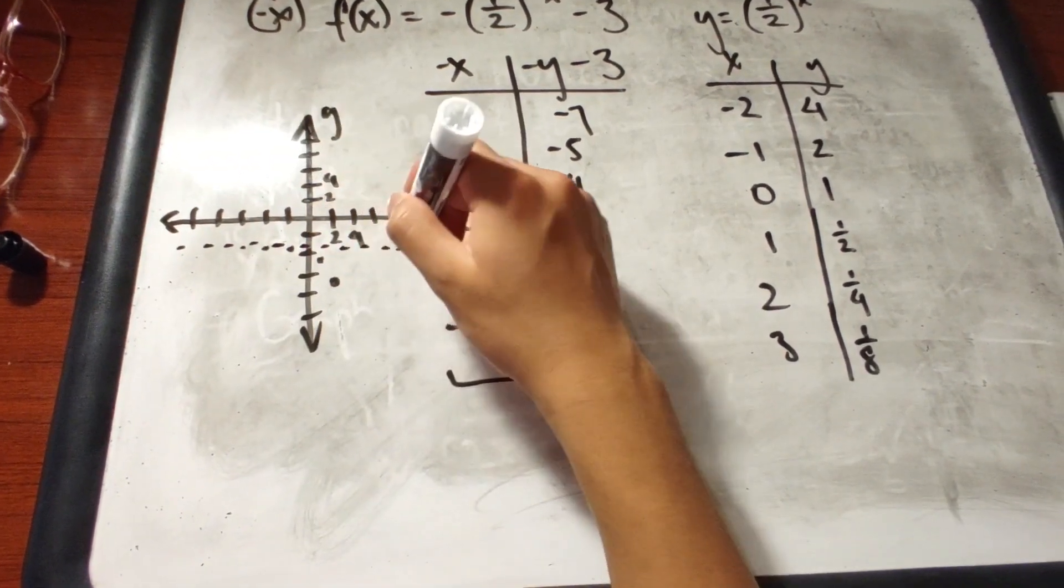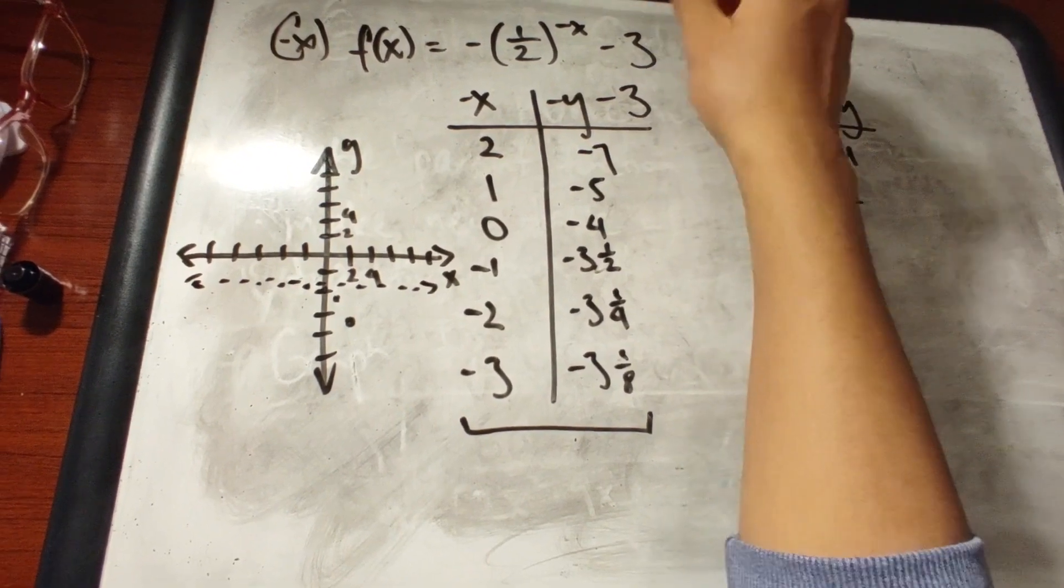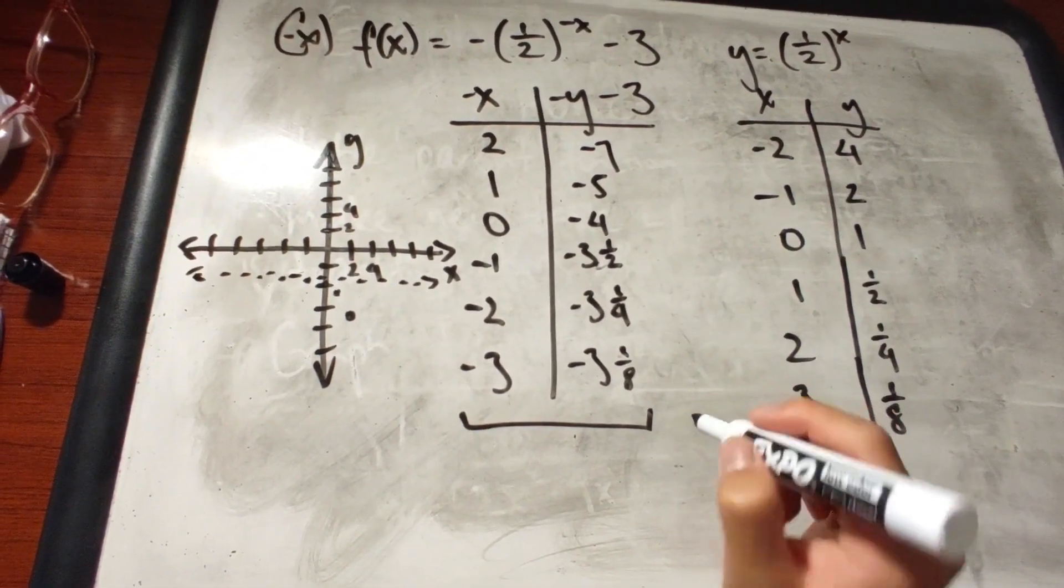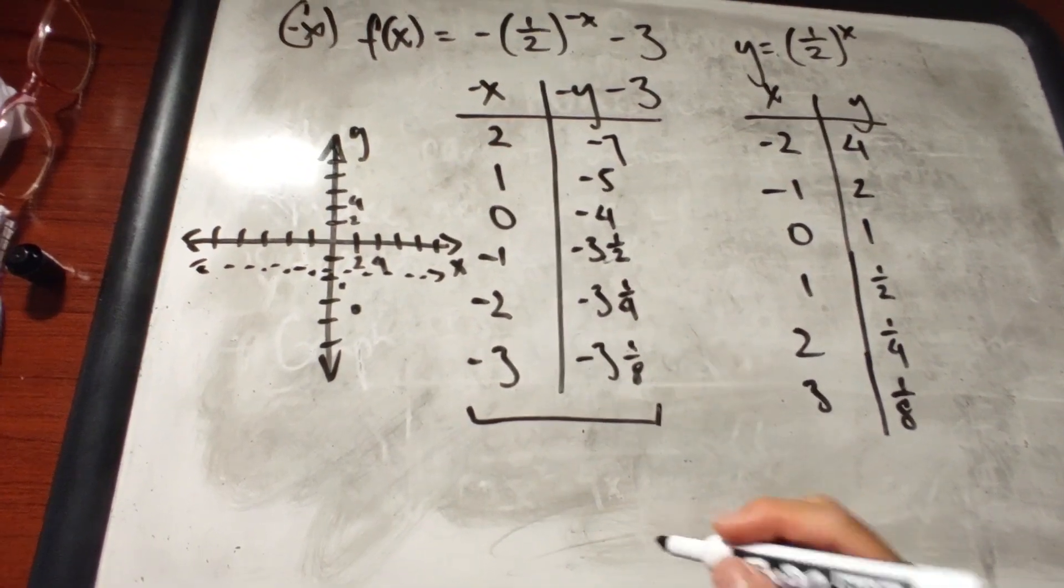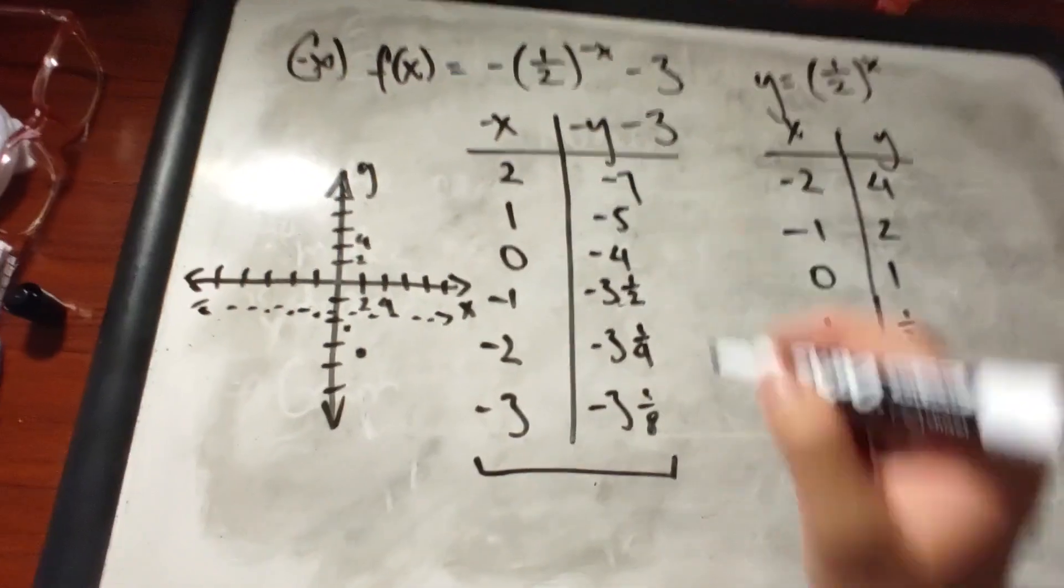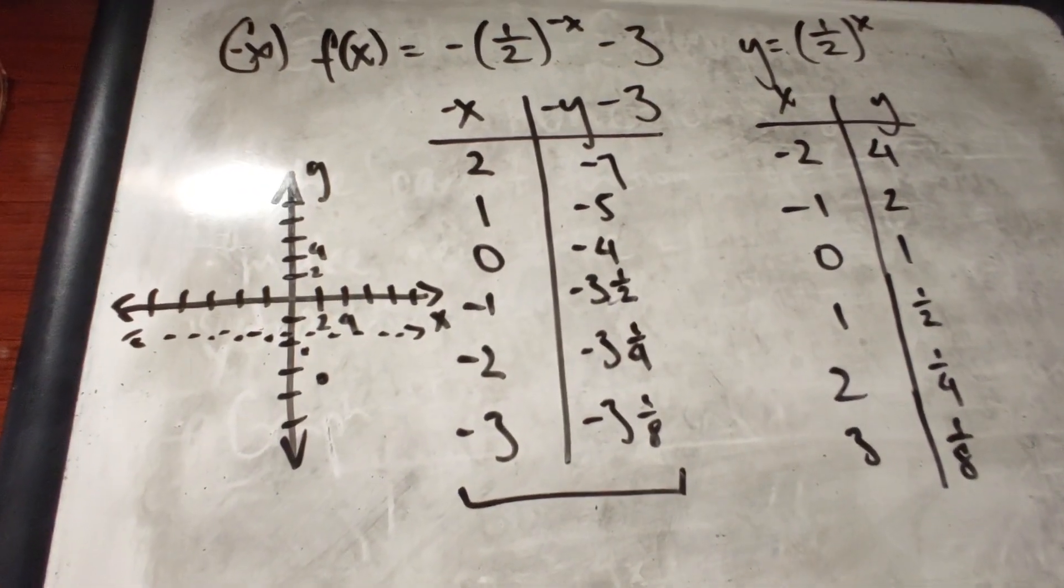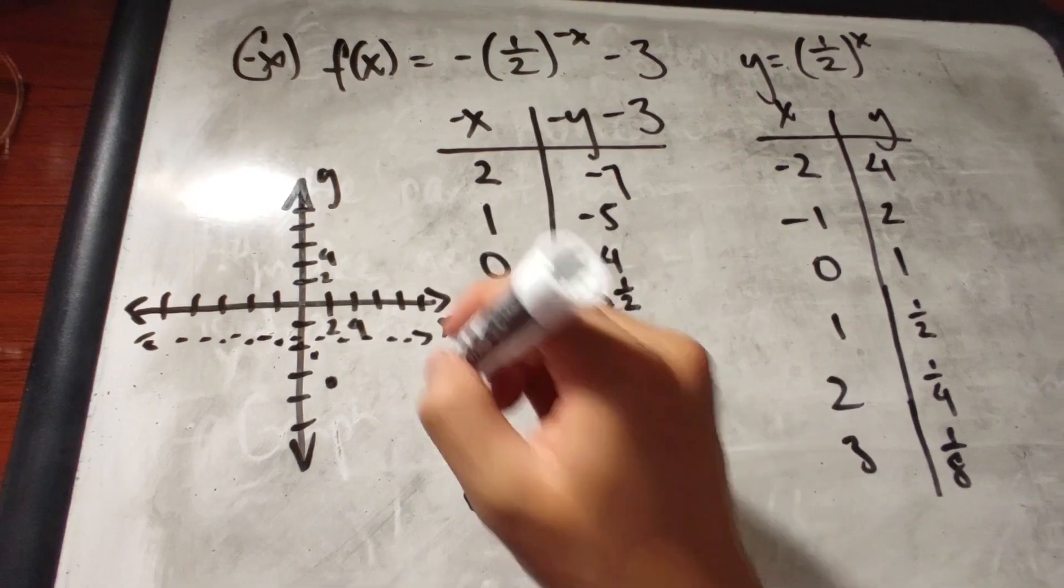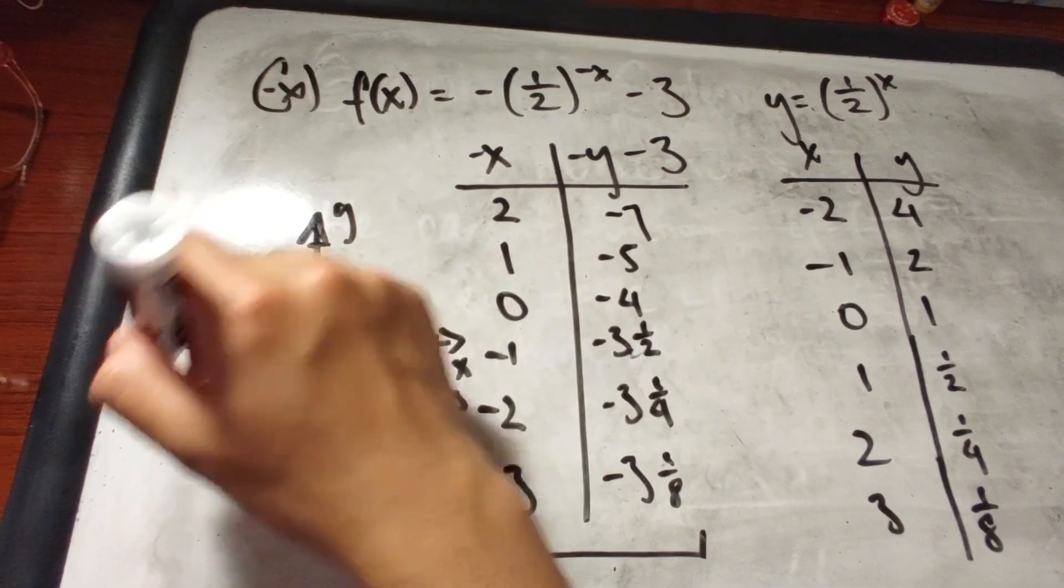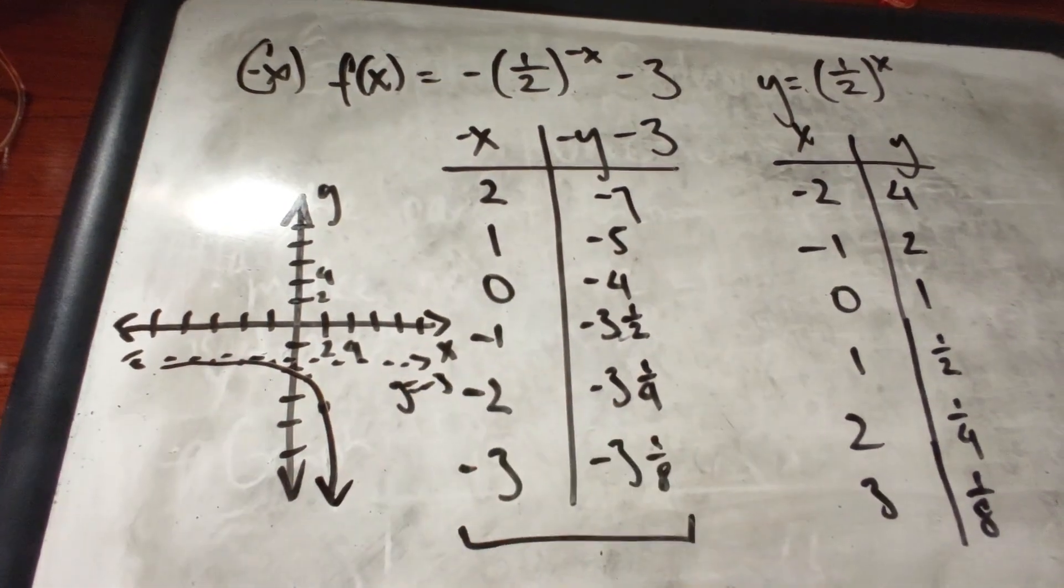What you could see here is that whatever this value is, that would affect the horizontal asymptote. Without that, the exponential function would have a horizontal asymptote at y equals 0. So when you subtract 3 from that, then the horizontal asymptote would be y equals negative 3. And with that, we could connect the dots to form the exponential function.